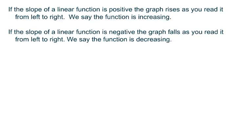We can make the following conclusion. If the slope of a linear function is positive, the graph rises as you read it from left to right. More technically, we say that the function is increasing. But, if the slope of the linear function is negative, the graph falls as you read it from left to right. It goes down. And, technically, we say that the function is decreasing.